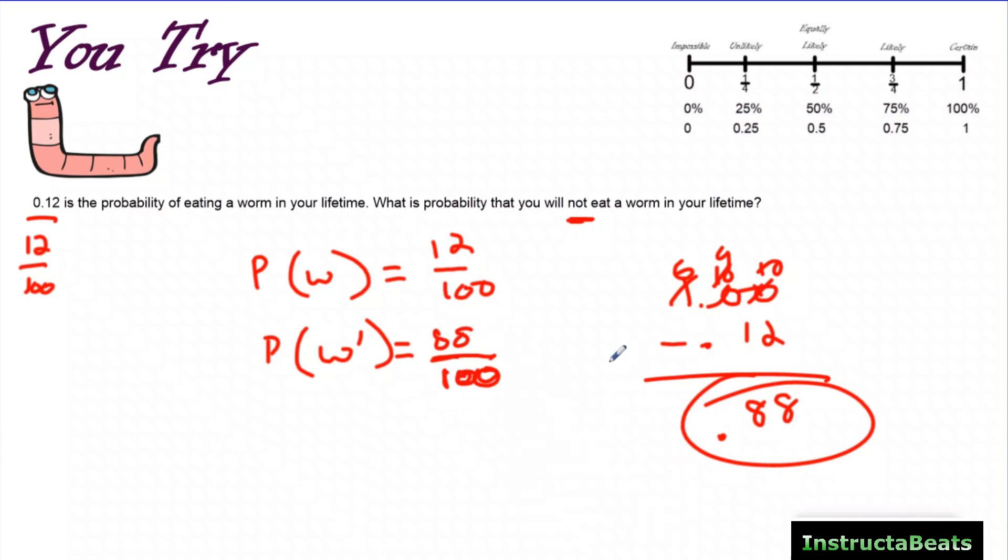It's not even asking what the complement of an event is, but that is the skill that you're using to answer these questions. And if we want to add a descriptive word to this, we could probably say very likely, because the event of not eating a worm is pretty close to one or 100%. So it's not quite certain because it's not all the way to 100%, but it's more than likely. So I would even use the word very likely to describe the chances that you don't eat a worm.